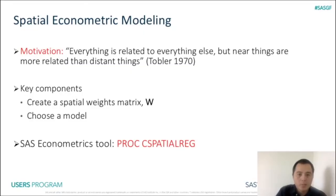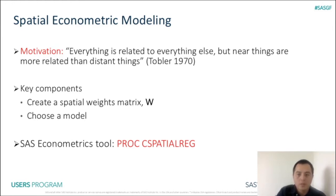First, a little bit of background information about spatial econometric modeling. Spatial econometric models extend standard econometric models to address spatial interaction and heterogeneity in cross-sectional and panel data. The motivation behind spatial econometric modeling is the first law of geography, which says everything is related to everything else, but near things are more related than distant things. From the modeling point of view, the first law of geography suggests that data collected across different units in space are often correlated, and the strength of such dependence is determined by the proximity of two units in space.